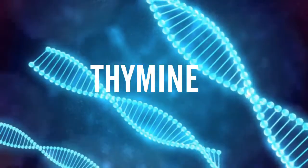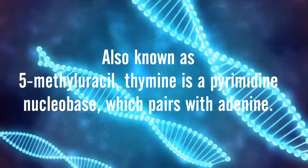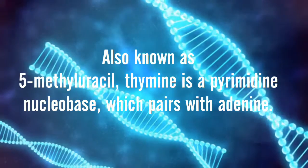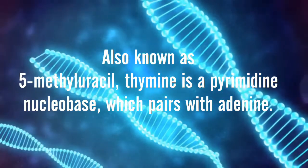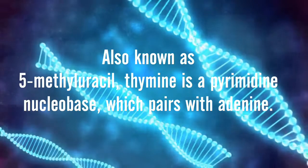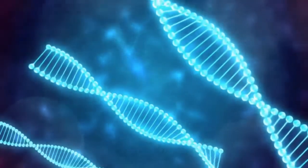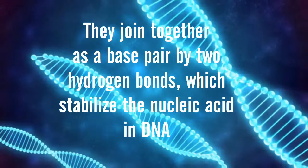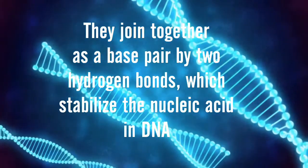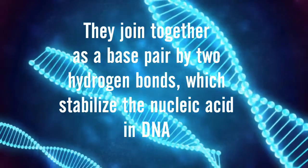Thymine, also known as 5-methyluracil, is a pyrimidine nucleobase which pairs with adenine. They join together as a base pair by two hydrogen bonds, which stabilise their nucleic acid in DNA.